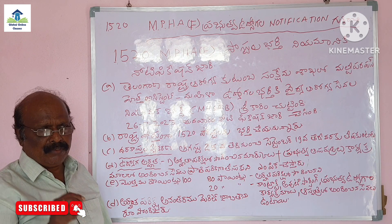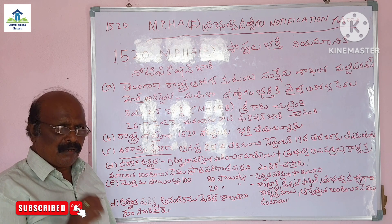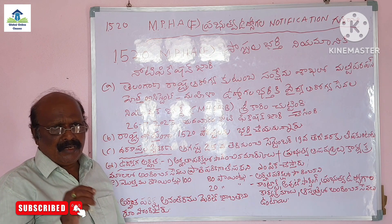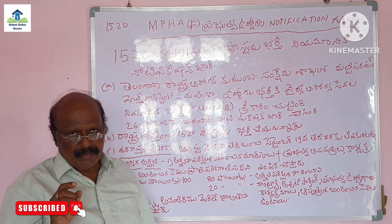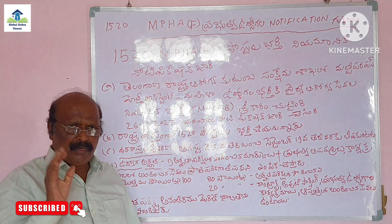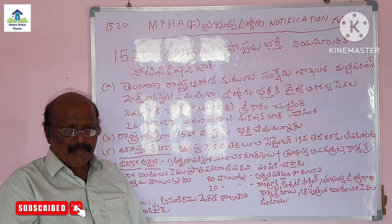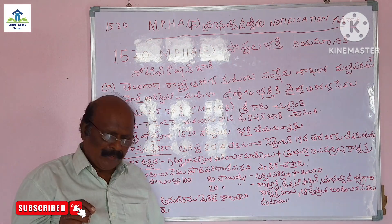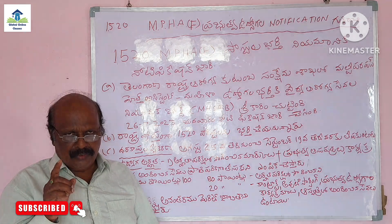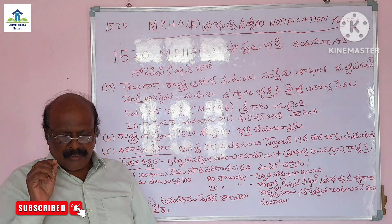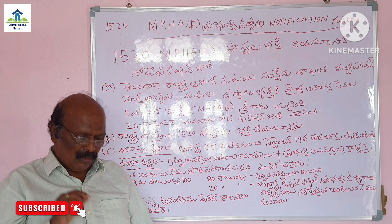They have been the same computer. There is a computer version of the internet — computer version, computer version, and computer version. In addition to the computer version of the internet, the computer version has a smaller number of devices. In the first zone, the first zone is the first zone, then the second zone, 4th zone, and 5th zone.